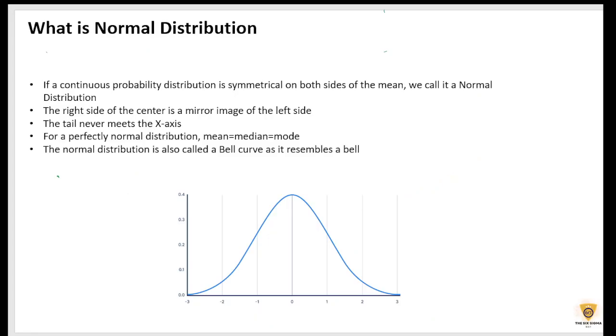Normal distribution is when we make a bell curve. If this is my mean, then the distribution should be symmetrical on both sides. In other words, the right side of this is a mirror copy of the left side. So this is called a normal distribution.